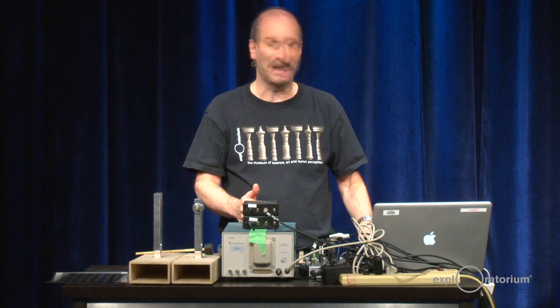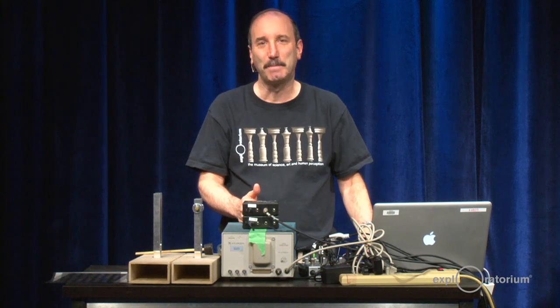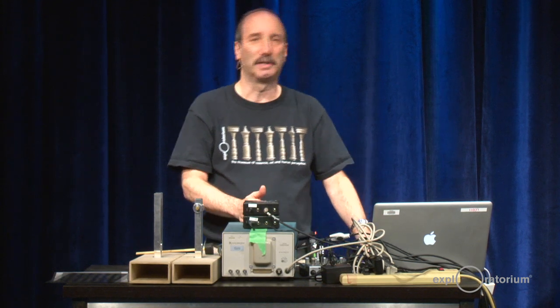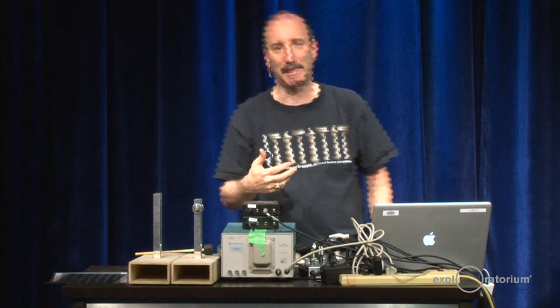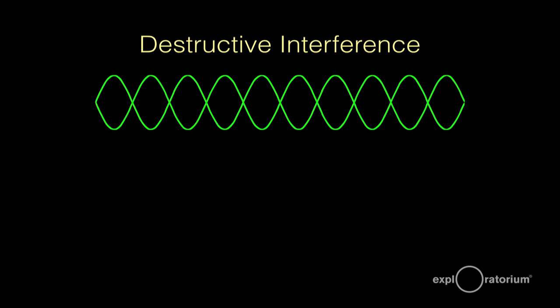In destructive interference, here the two waves are not lined up with each other. The crest of one wave is lined up with the trough of the other wave, and the trough of the top wave is lined up with the crest of the bottom wave. When I combine them, the crest of one wave fills in the trough of the other, and the result — surprisingly — is nothing. Two somethings can add up to nothing, and that's a surprising result.